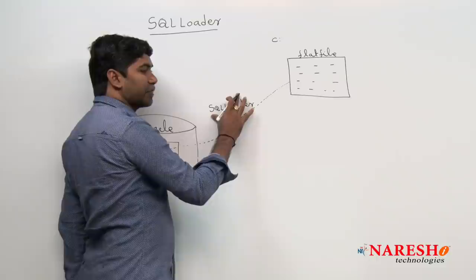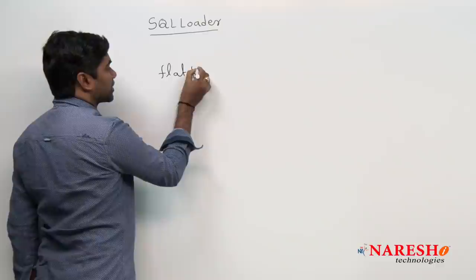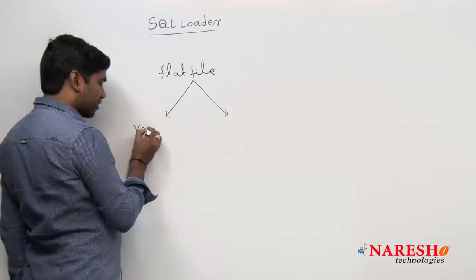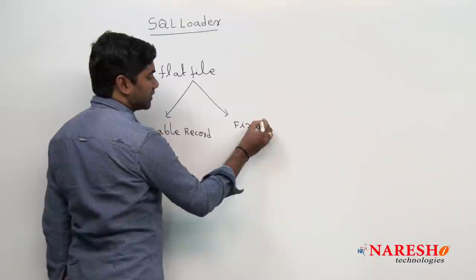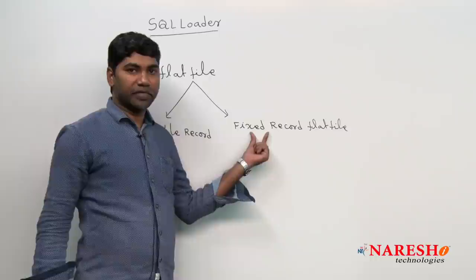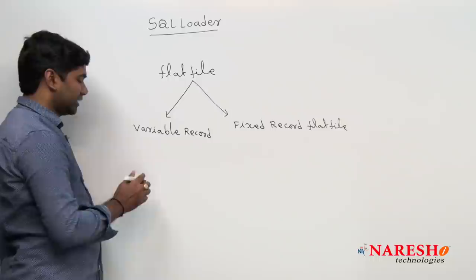First, we are learning how many types of flat files are available. A flat file is a structured file which contains a number of records. Two types of flat files are available: one is Variable Record Flat File (also called Variable Length Record Flat File), and another is Fixed Record Flat File (Fixed Length Record Flat File). A Variable Length Record Flat File is a flat file which has a delimiter between fields.